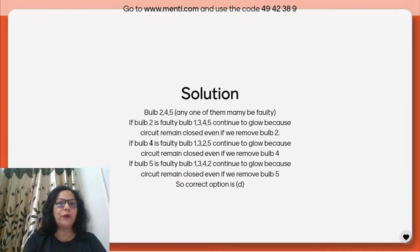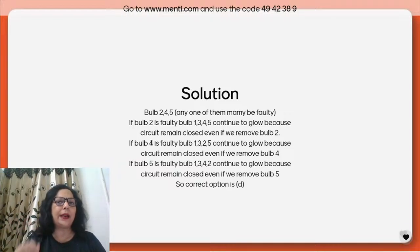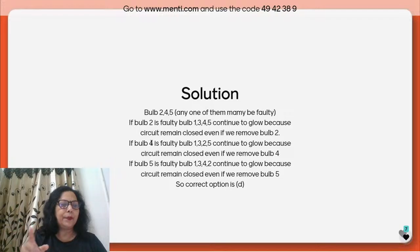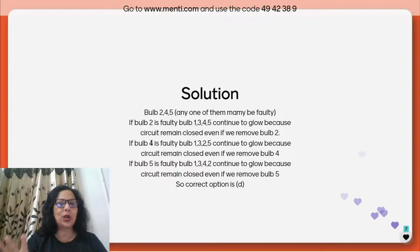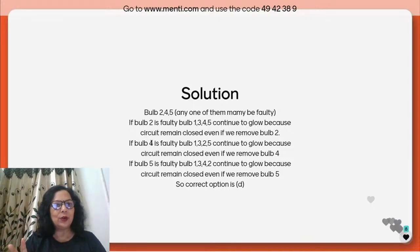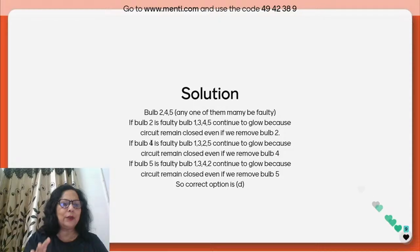If bulb 2 is faulty, bulbs 1, 3, 4, and 5 will continue to glow. If bulb 5 is faulty, bulbs 1, 3, 4, and 2 will glow. If bulb 4 is faulty, bulbs 1, 3, 2, and 5 will glow. These are all previous year questions — you don't see such questions in school books.